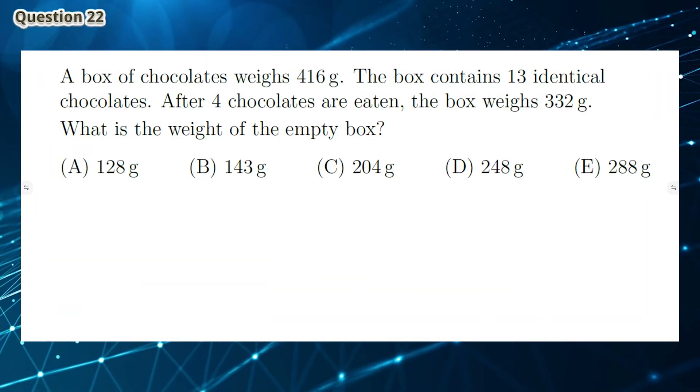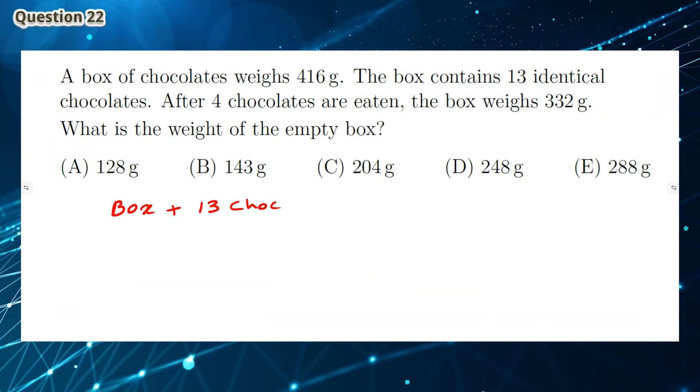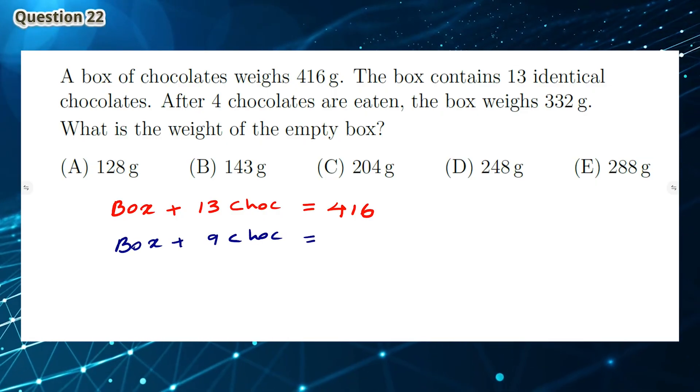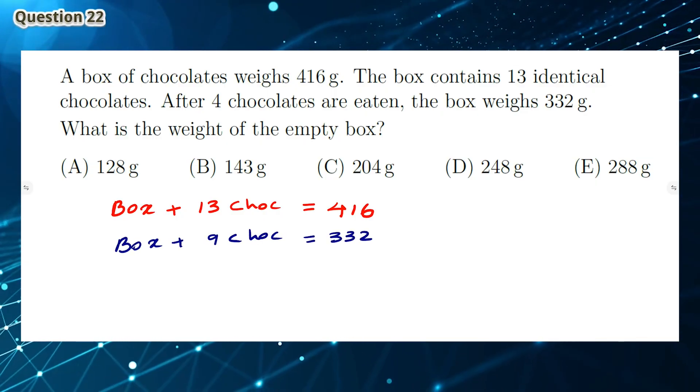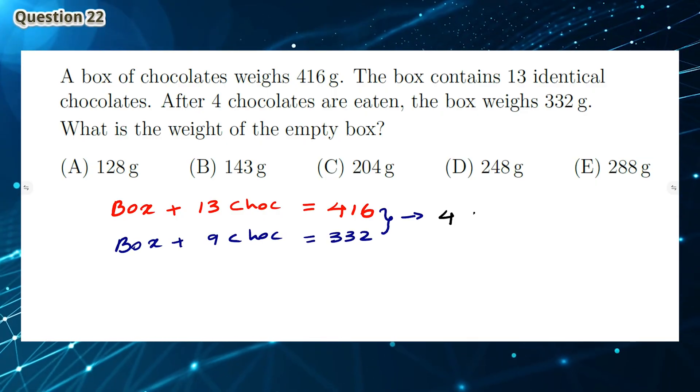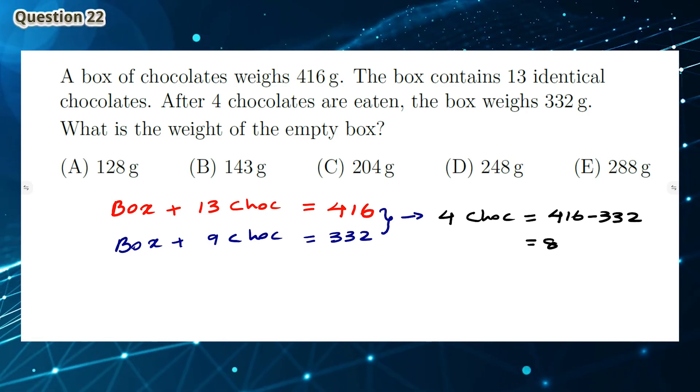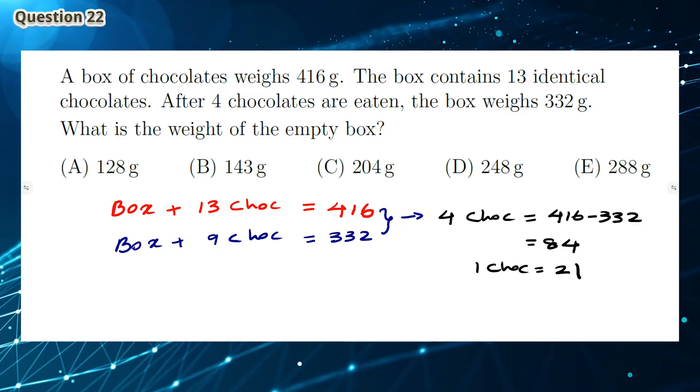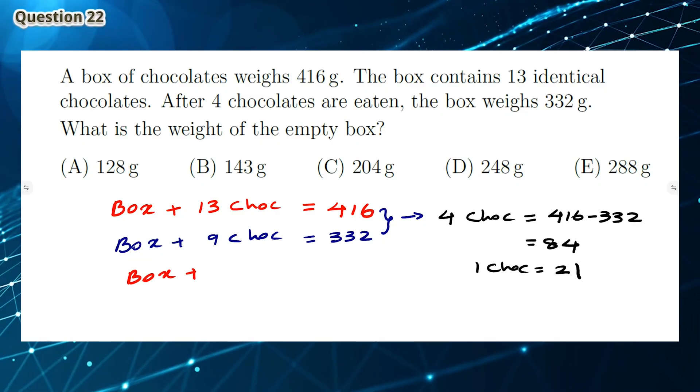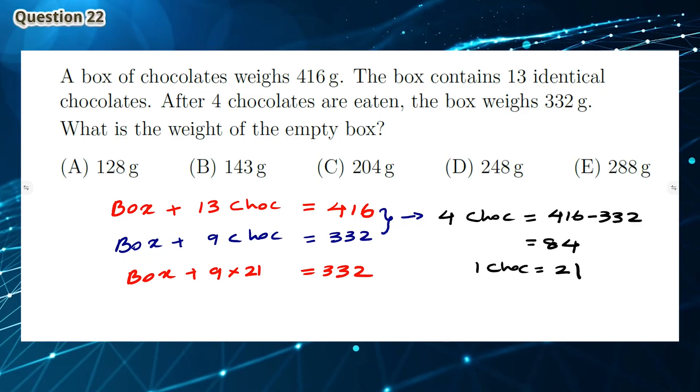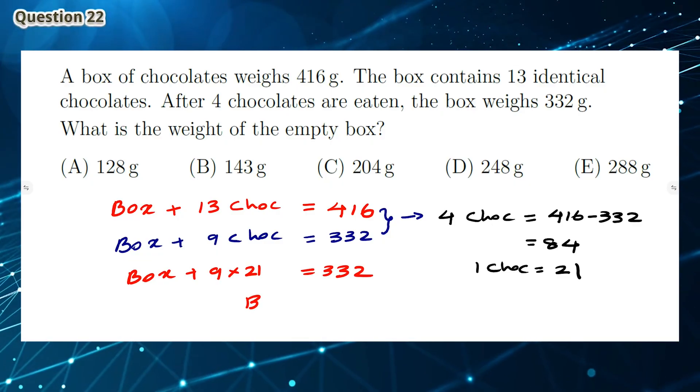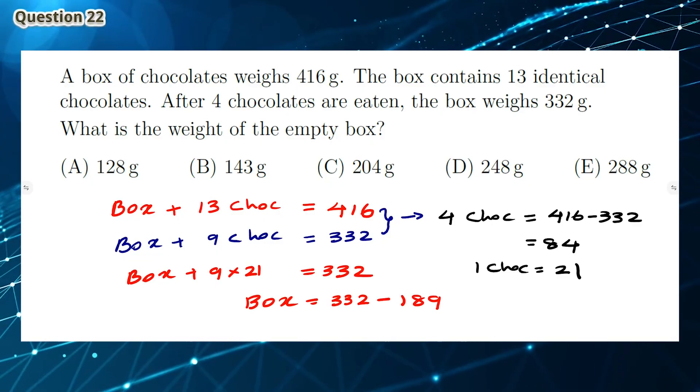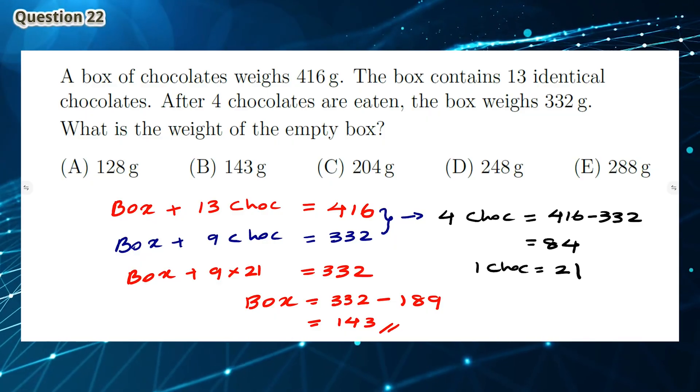Question 22: A box plus 13 chocolates equals 416 grams. A box plus 9 chocolates equals 332 grams. The 4 chocolate difference between these two equations equals 84 grams, which means one chocolate must weigh 21 grams. We can sub this value into our second equation to find that the box equals 332 minus 189, which is 143 grams. So the answer is B.